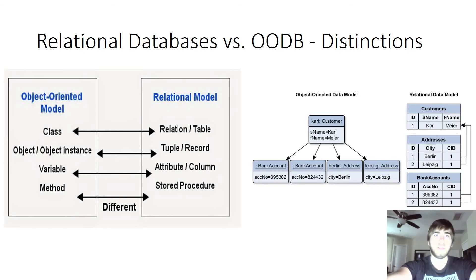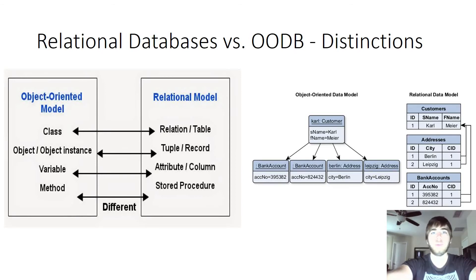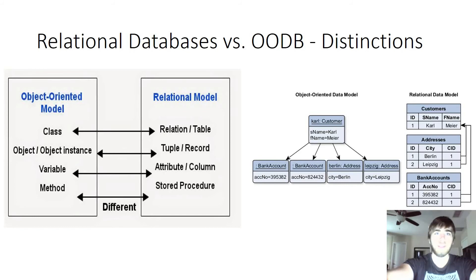Some of these similarities may be obvious, such as that each of the classes and tables have the same names and hold variables of the same names. The object-to-record equivalency is a little less easy to recognize, but if you have access to a customer's name and ID in either model, you also have access to their associated address and account number. The distinction between a stored procedure and a method is that a method is defined in the class to which the object belongs, while a stored procedure is a subroutine available to applications and is external to the database.